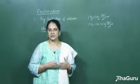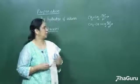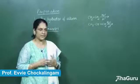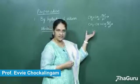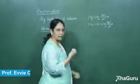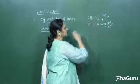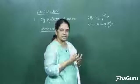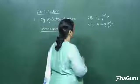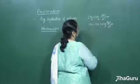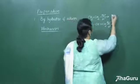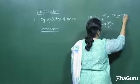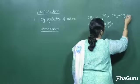Let us see the various preparation methods for alcohols. The first one is hydration of alkenes. We take an alkene and add water. In case we take a symmetrical alkene like ethene, it is the addition of a water molecule — H and OH get added across the double bond — so we get CH₃CH₂OH.